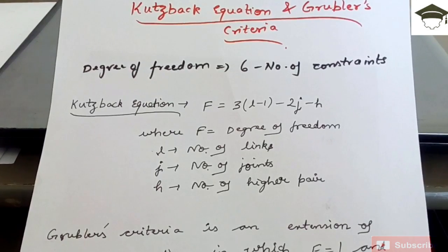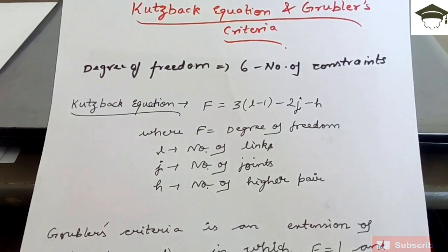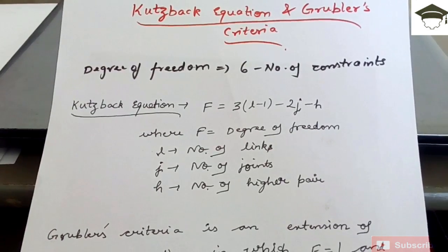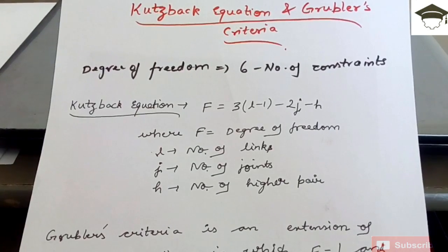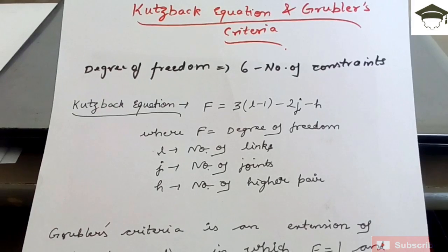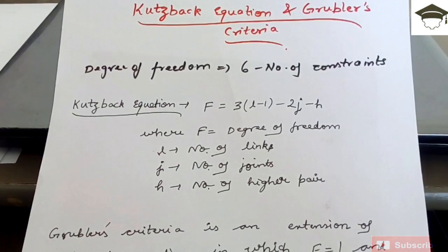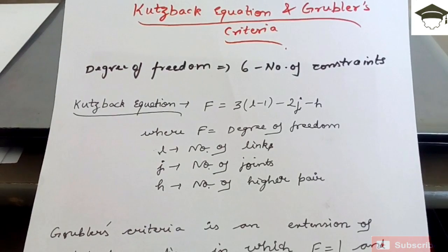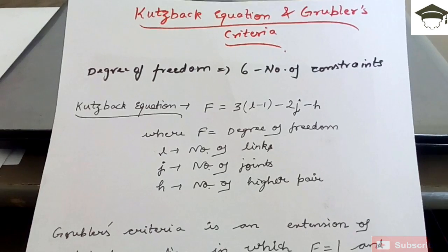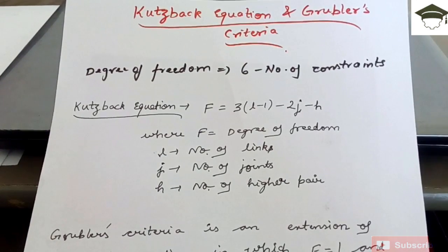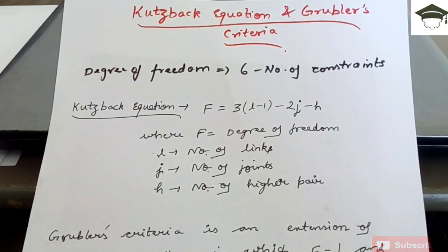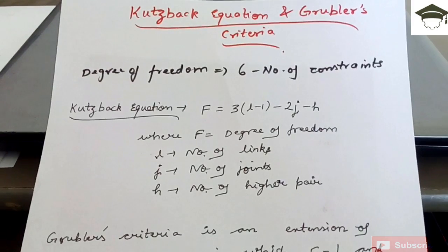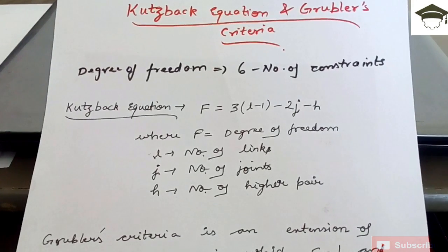Now for a mechanism or for a link the maximum degree of freedom can be six, but here for a complete mechanism which consists of many links, the degree of freedom will be less than six because there will be some constraints applied on those links so as to form a mechanism. So degree of freedom is given by six minus number of constraints. Now the above formula, six minus number of constraints, is for a particular link.